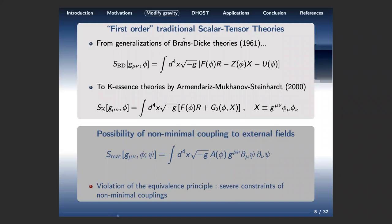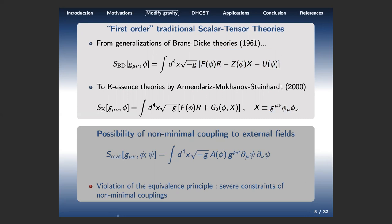The simplest traditional scalar-tensor theories introduced to understand aspects of general relativity are the Brans-Dicke theories. You have the Ricci scalar R, and you add a field phi with a Lagrangian where X denotes the kinetic density of the scalar field: X = ∂_μ φ ∂^μ φ. These theories have been studied extensively since the 1960s.